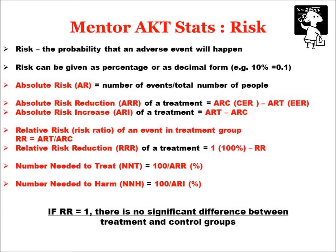It's also useful to talk about relative risk, which you'll come across in the AKT. A relative risk is not an attributable risk to an individual — it's a comparison of risk in one group compared to another, so it's a ratio. Relative risk and risk ratio are interchangeable terms. The relative risk of an event in a treatment group compared to a control group is given by ART divided by ARC. The relative risk reduction is 1 (or 100%) minus the relative risk — how much a treatment reduces risk relatively in one group compared to another.